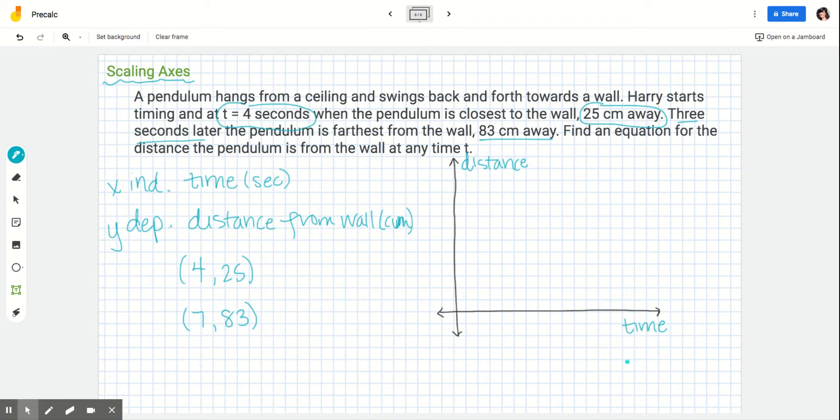When we go to scale our axes, we can't just go from 4 to 7 and 25 to 83. But we do want to think about these are the values we want to show. I need to get from 4 to 7 on my x-axis, but I still have to count by the same amount. The distances between my spaces have to always be the same. I have to make sure it's a constant rate of change along each of my axes.